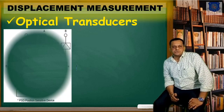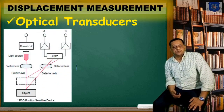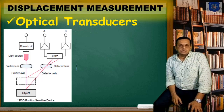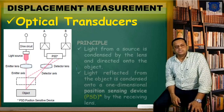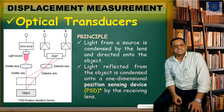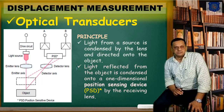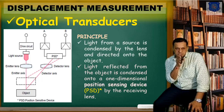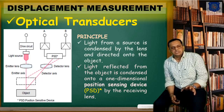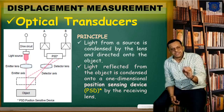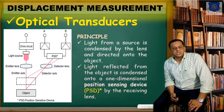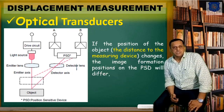For optical transducers, we will be supplying light through an emitter lens to the object. The object will reflect the ray, which is then sent to a device called PSD — the position sensing device. The reflected light is received by the receiving lens, which concentrates the light ray on the PSD, giving two outputs: output A and output B, which will be compared.